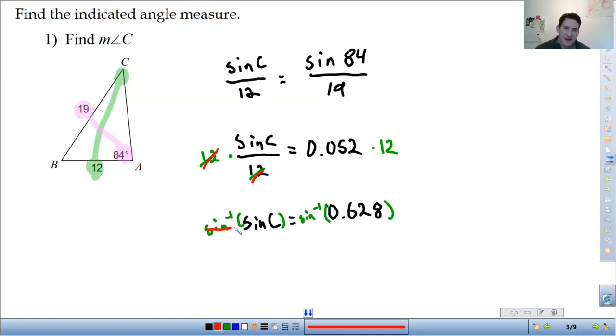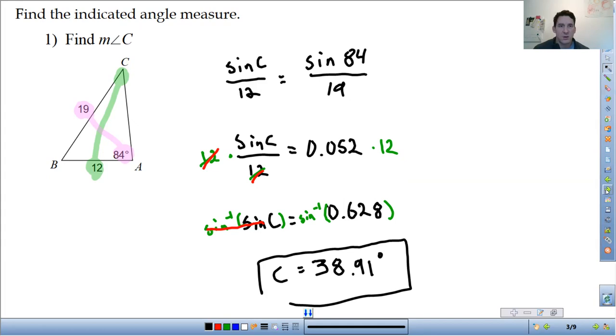So the inverse sine and sine cancel each other out. We're left, which is C, the measure of angle C is equal to, and I have to do the inverse sine on the calculator. So second inverse sine of 0.628. That comes out to 39.1 or 0.9, 38.91. 38.91 degrees is measure of angle C. Alright, let's do one more like that.